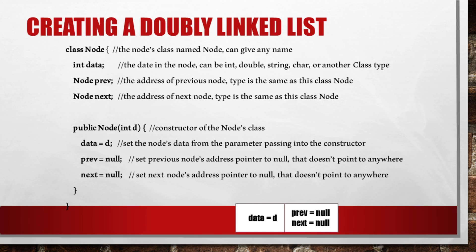Node prev holds the address of the previous node, with the same data type as the Node class. Node next holds the address of the next node, also of the same type. The constructor public Node(int d) sets the node's data from the parameter passed in. Prev is set to null, meaning it doesn't point anywhere, and next is also set to null, meaning it doesn't point anywhere.